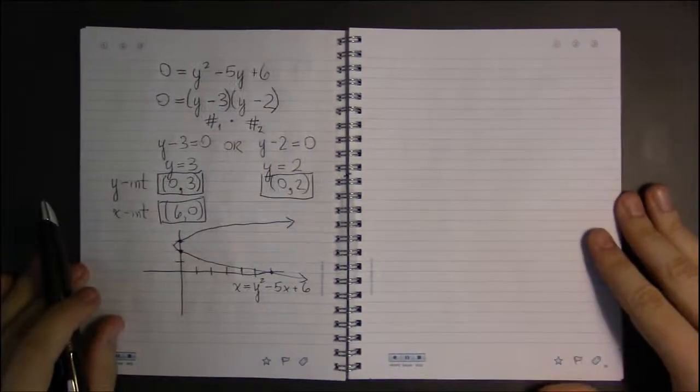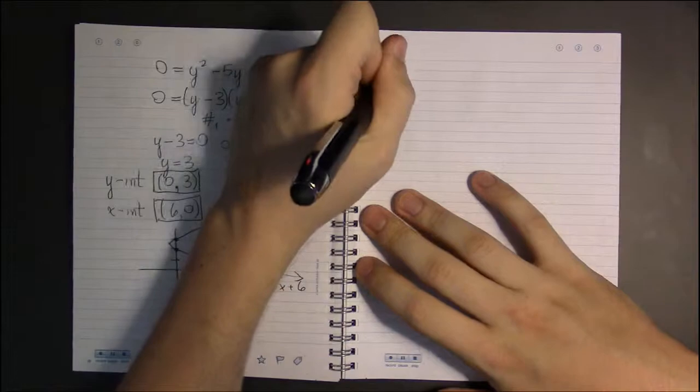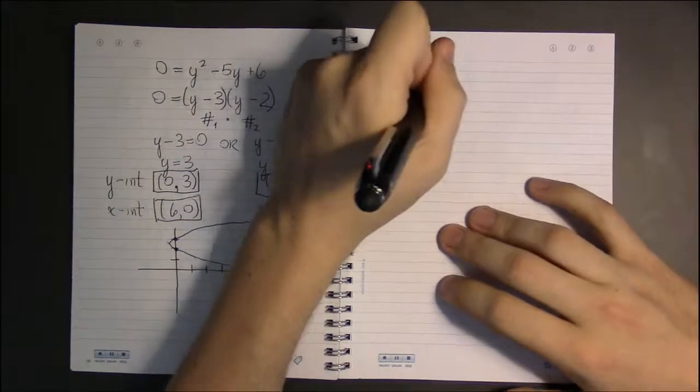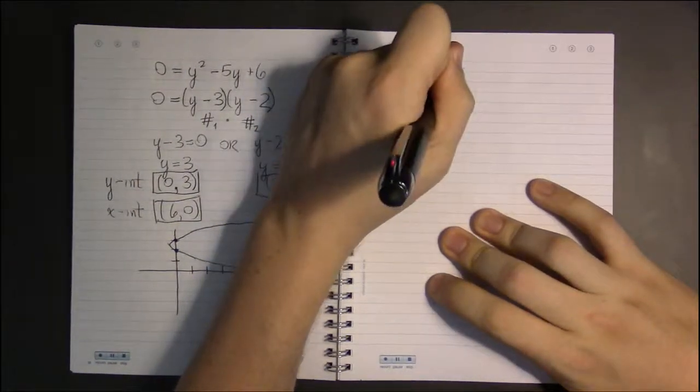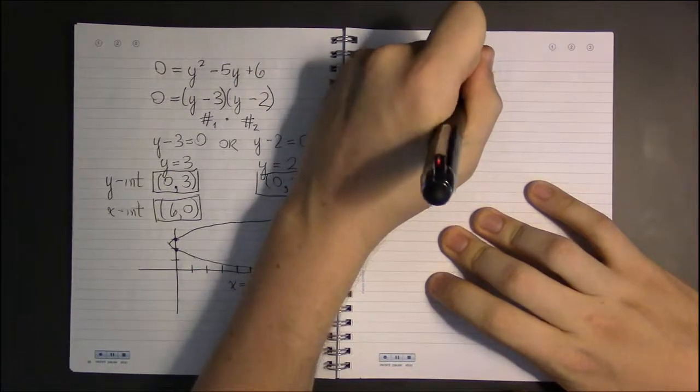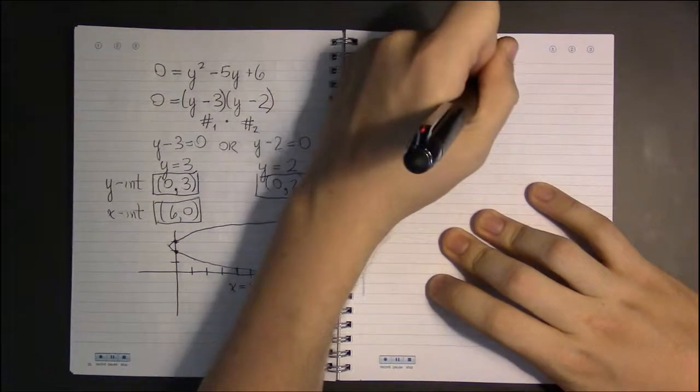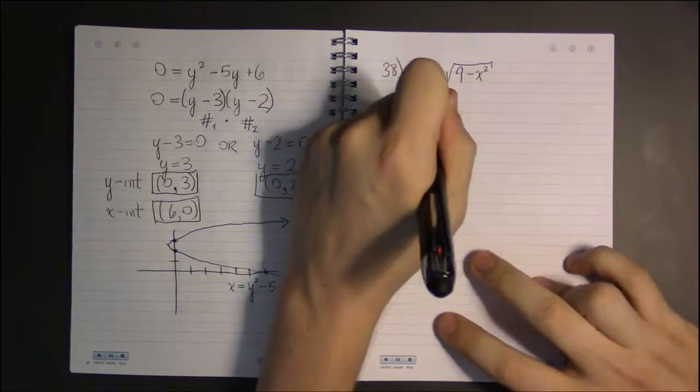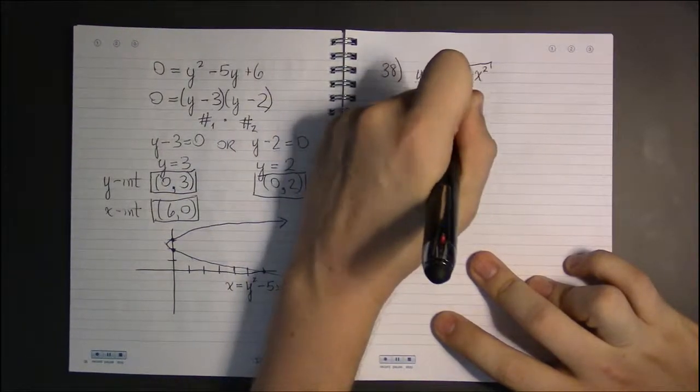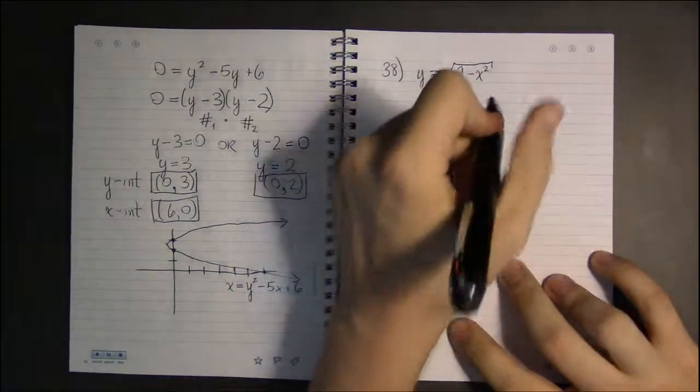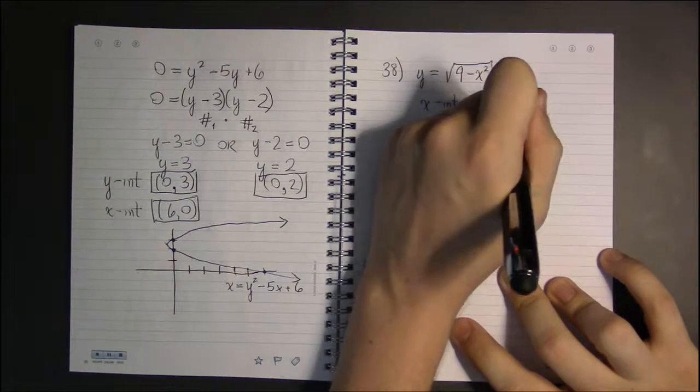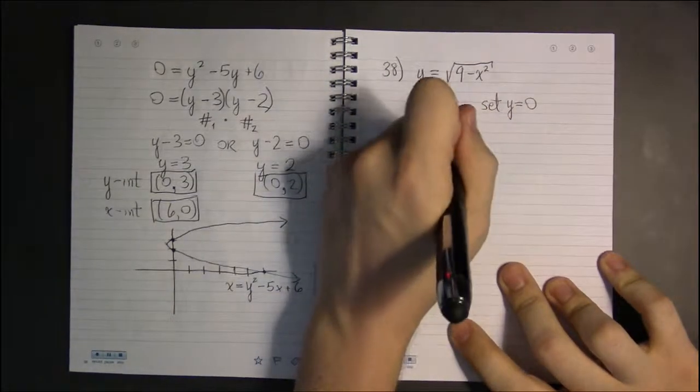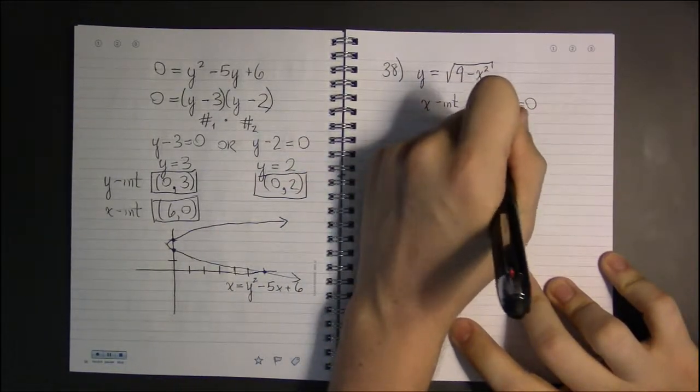Let's take a look at another example, number 38, which is y equals the square root of 9 minus x squared. So to find the x-intercept, and I'll just abbreviate intercept with int, the x-intercept, we're going to set the other variable, y, equal to 0. So with y equal to 0, we have this ugly thing.